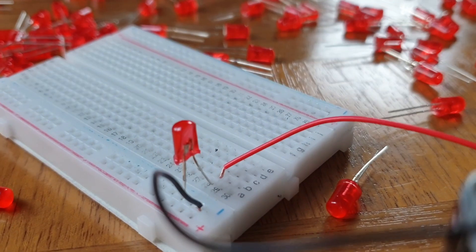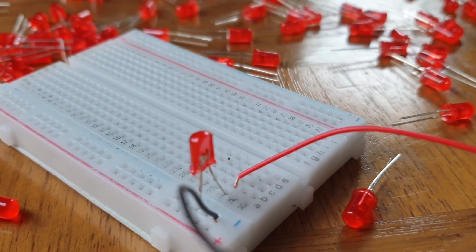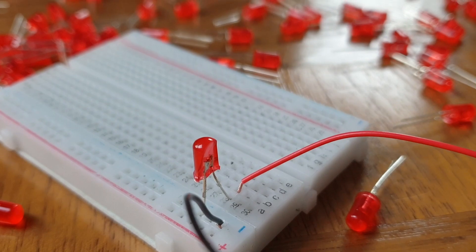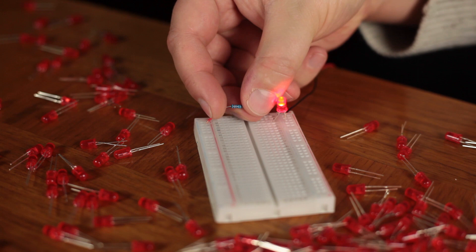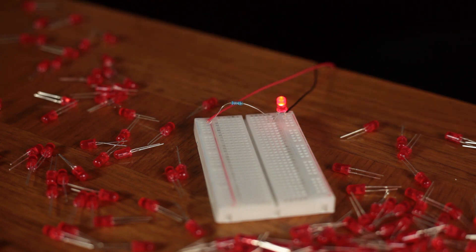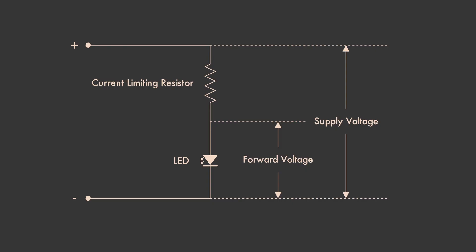You should note down the maximum current rating when ordering components. We've got to make it harder for electrons to reach the LED, which is why we'll place a resistor in series with the LED. It's called the current-limiting resistor and does exactly what the name implies.